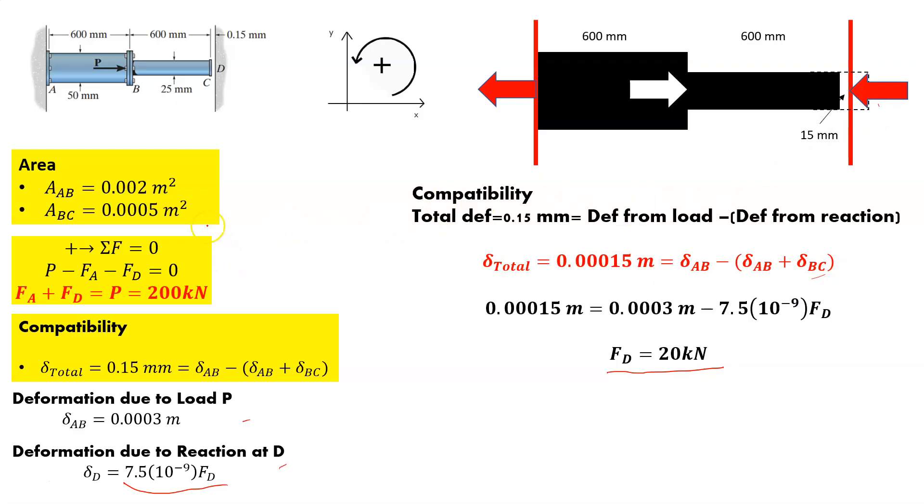Now keep in mind, we've also got this to worry about, our equilibrium equation. So we know the force at D and we know that the force that is being applied is 200 kilonewtons. So that means the force at A is just the difference and it comes out at 180 kilonewtons. So you're gonna have 180 kilonewtons on one side, 180 kilonewtons at A and 20 kilonewtons at D.